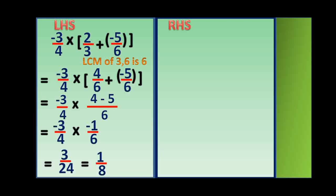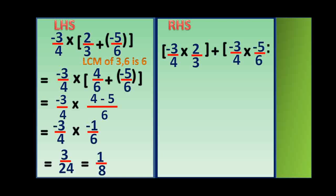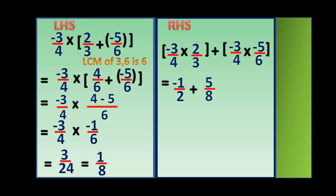Now let us solve the right hand side: minus 3 by 4 into 2 by 3 plus minus 3 by 4 into minus 5 by 6. If cancellation is possible, we can cancel. So you will be getting minus 1 by 2. The same thing can be done here also — if cancellation is possible, you can cancel the numbers, giving minus 4 by 8 plus 5 by 8.